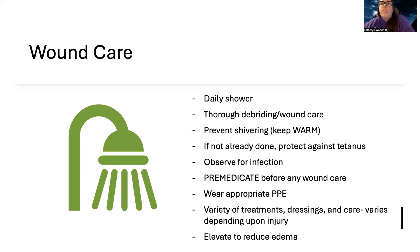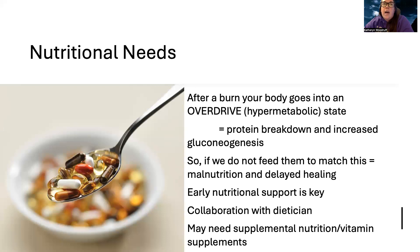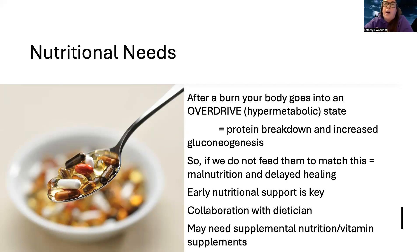We pre-medicate patients with pain medicine before any wound care, and we wear appropriate PPE. There are a variety of treatments, dressings, and wound care approaches — it varies depending on whether they have skin grafts, the depth of the wound. It's a whole specialty. Elevate burned limbs to help reduce edema. After a burn, patients go into a hypermetabolic state — they start breaking down protein and have increased gluconeogenesis. If you don't feed them to match this, they can have malnutrition and delayed healing. Start feeding them early, potentially with enteral or parenteral nutrition, and collaborate with the dietician.